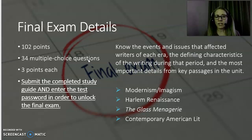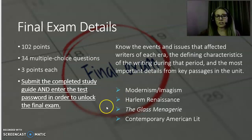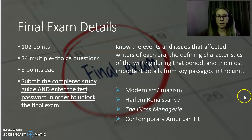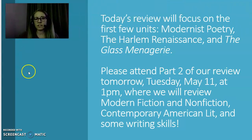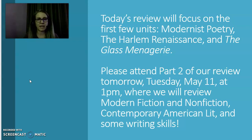You'll want to look at the events and issues that affected writers of each era, the defining characteristics of the writing during that period, and the most important details from key passages in the unit. That's primarily what we'll focus on in this review. We'll be looking at modernism and imagism, the Harlem Renaissance, The Glass Menagerie, and contemporary American literature. Today's review focuses on the first few units: modernist poetry, the Harlem Renaissance, and The Glass Menagerie.